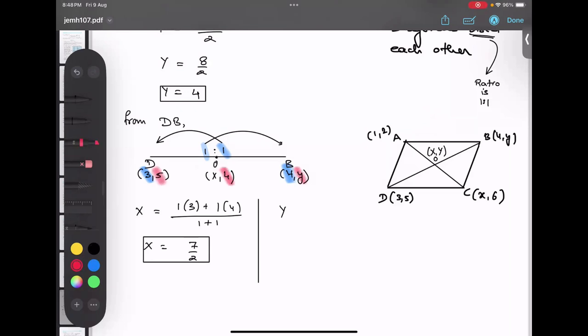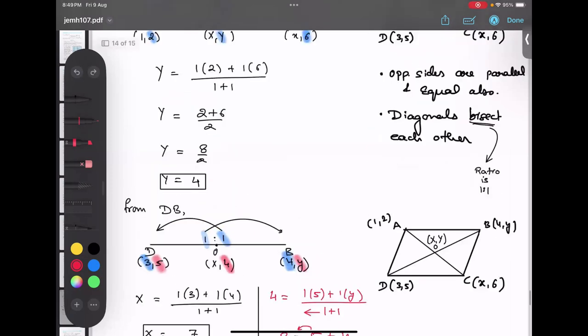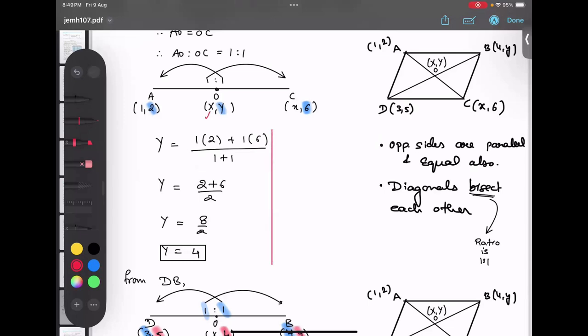Now this time again I will be using section formula. This time I can take for x. So that would be 1 multiplied by 3, 1 multiplied by 4. 1 multiplied by 3 plus 1 multiplied by 4 upon 1 plus 1. So x value would be 7 upon 2. You can write 3.5 or 7 upon 2. Now for y, through this I can find out this y value. Y value is 4. So I'm going to replace this thing. 4 equals to 1 multiplied by 5, 1 multiplied by y. At this time I'm taking small y. 1 plus 1. So I'll just shift this thing to the other side. 2 into 4 is 8. 8 equals to 5 plus y, so my y value is 3.